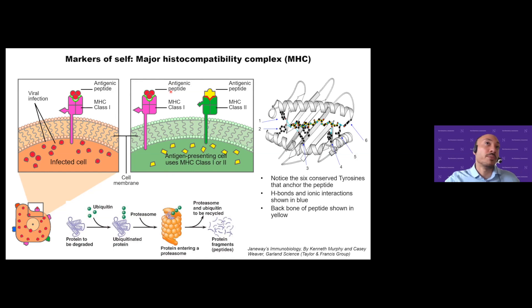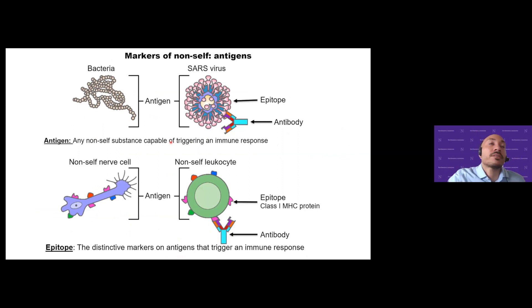Keep in mind this is going on all the time with your own self-proteins. Most of the time MHC-1 is presenting these peptides on the surface and nothing is happening — it's actually tolerizing and protecting you from the immune response. That's why there has to be an adjuvant present to signal when the foreign protein or peptide being presented is actually dangerous and should be mounting an immune response.